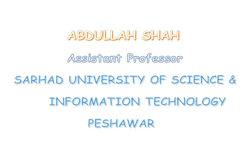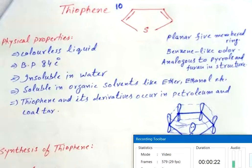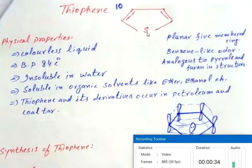In today's session we are going to discuss thiophene. Thiophene is a five-membered heterocycle having four carbon atoms and one sulfur. Thiophene is a colorless liquid having boiling point 84 degrees Celsius and melting point minus 38 degrees Celsius. Thiophene is insoluble in water but soluble in most organic solvents like ether, ethanol, etc.